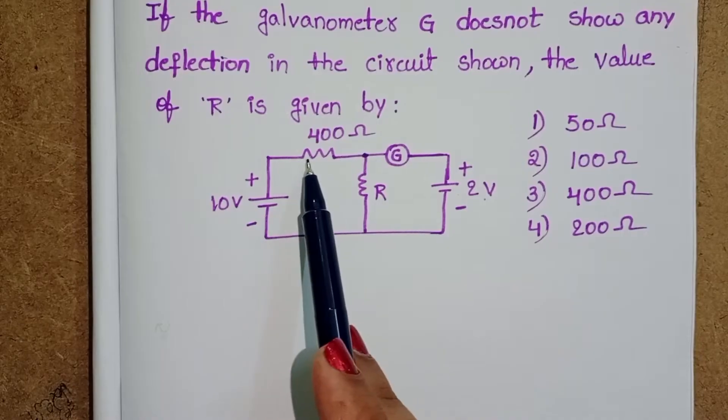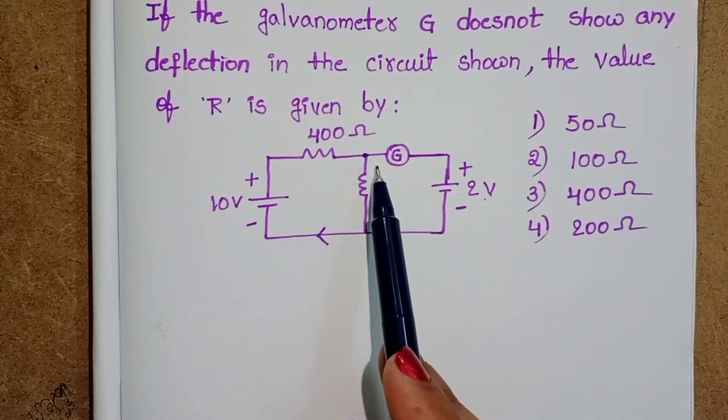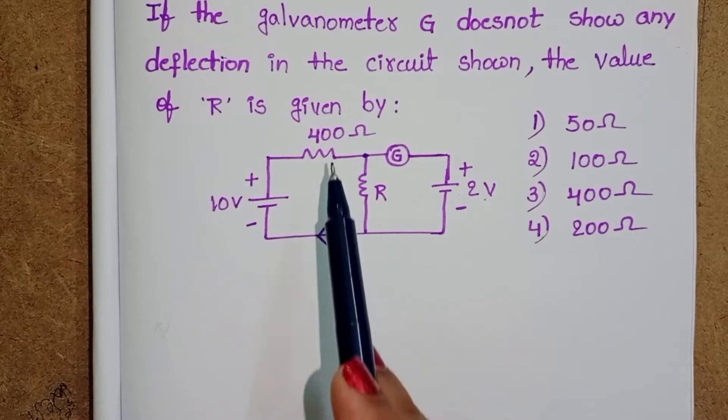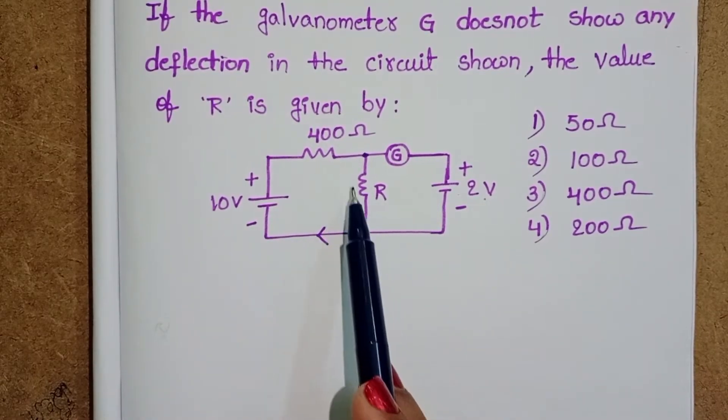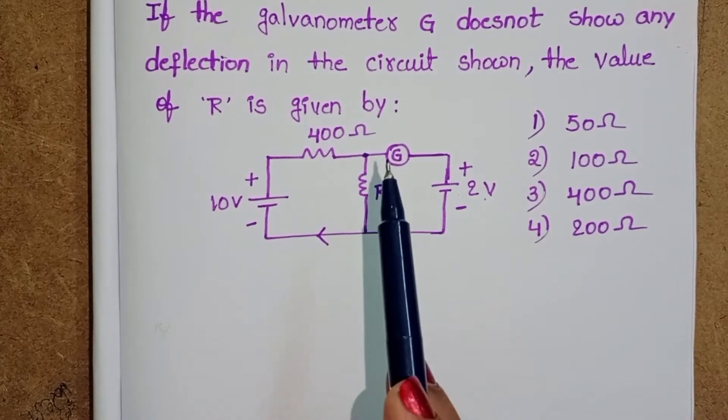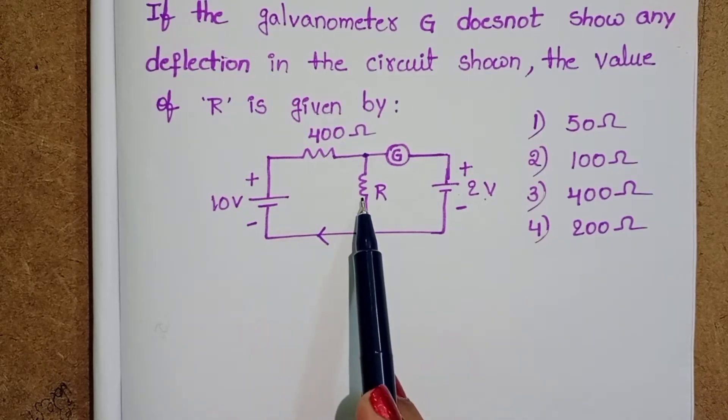How much current is passing through the resistor? Same current is entering through the resistor R. So these two resistors are connected in series. While these two resistors are connected in series.